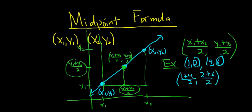You can also use the formula, it's the same thing. You're basically adding the x's and dividing by 2, and adding the y's and dividing by 2. So you get 5 over 2, and then 2 plus 6 is 8, so 8 over 2.